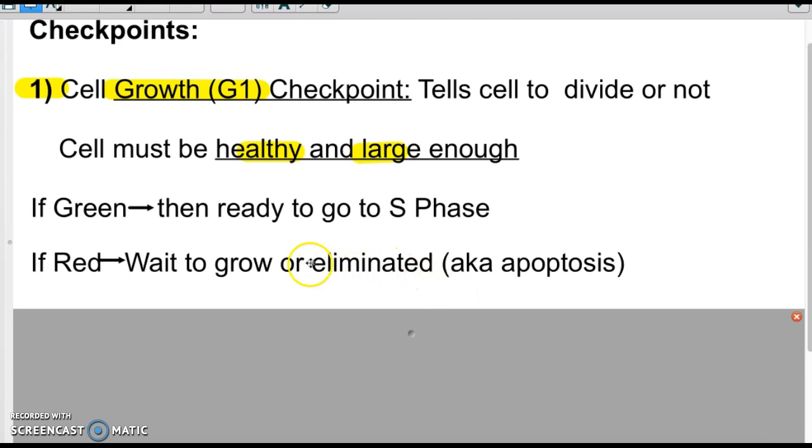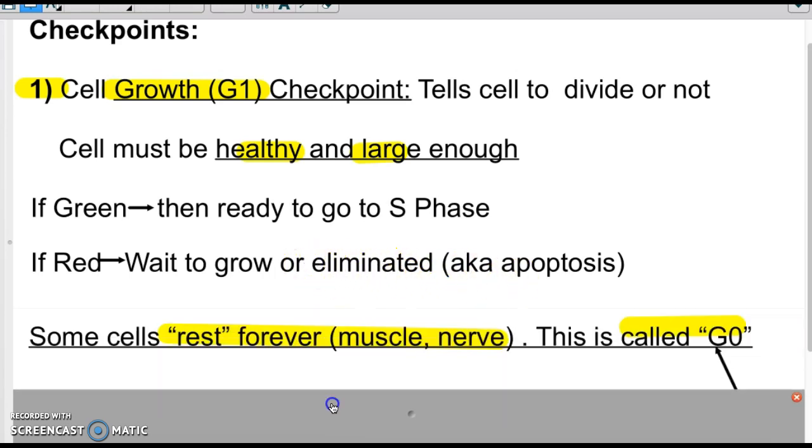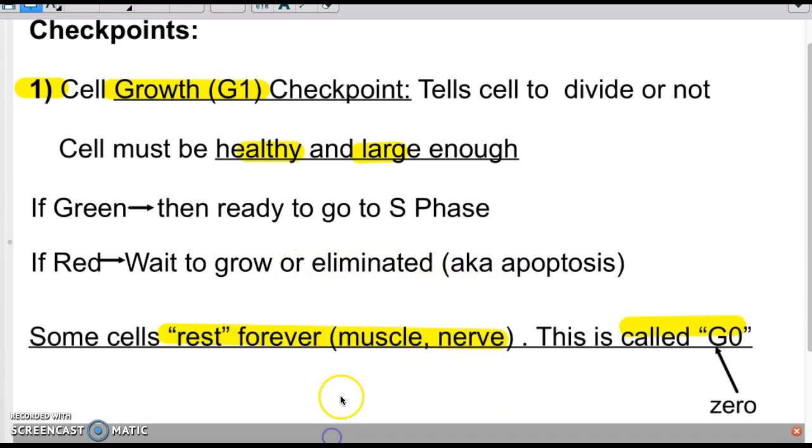There are some cells, though, that will be in what we call rest forever. They will be in something called a G0, a G0 phase. And so they will never go past the growth phase. They will just remain that same type of cell and they won't ever divide anymore. Some examples of those could be some nerve cells.